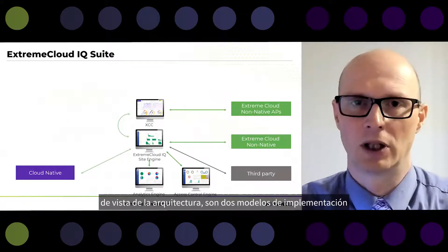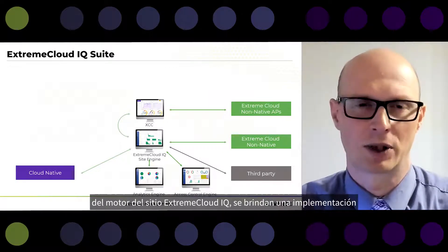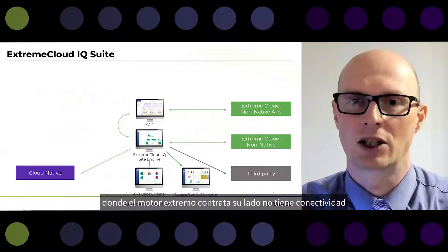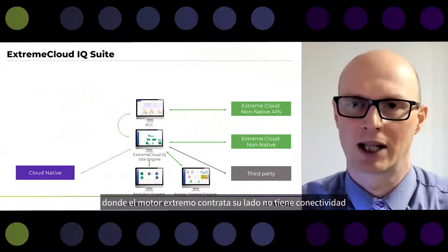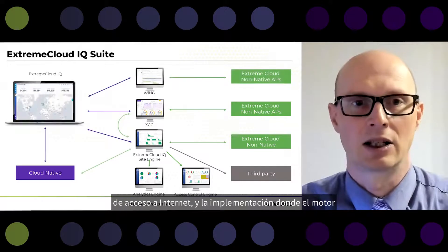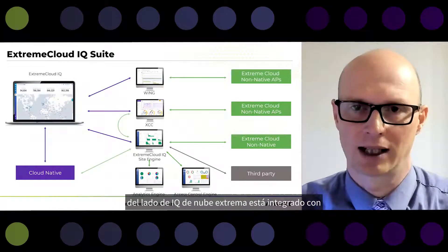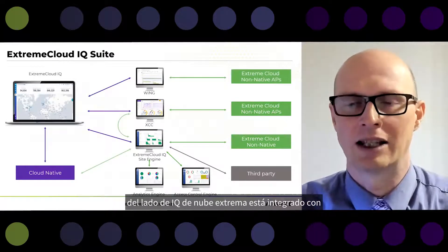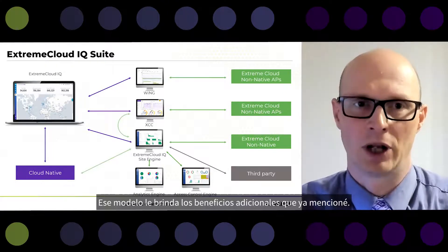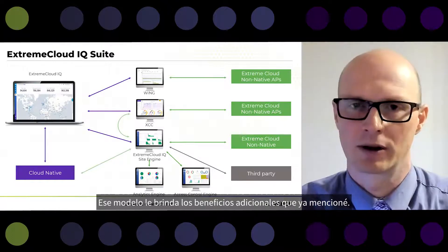From an architecture point of view, there are two deployment models of Xtreme CloudIQ Site Engine: an air-gap deployment where the Site Engine does not have internet connectivity, and a deployment where the Site Engine is integrated with Xtreme CloudIQ, which gives you the additional benefits already mentioned.